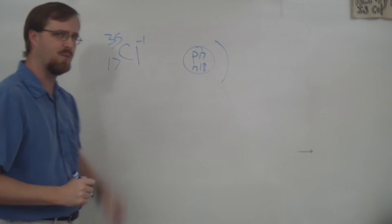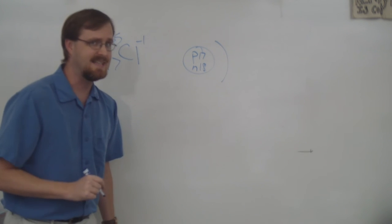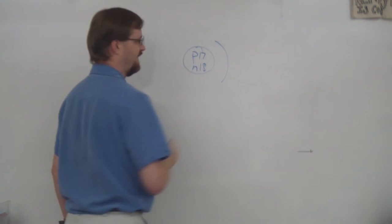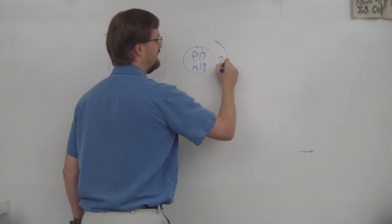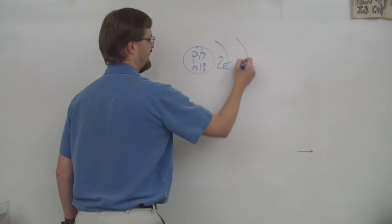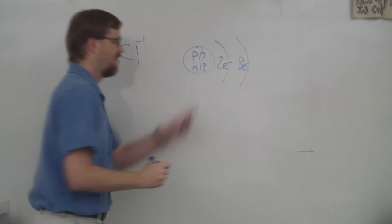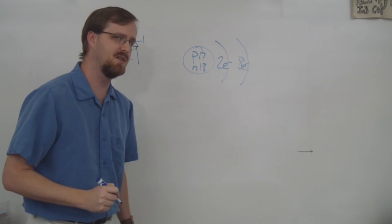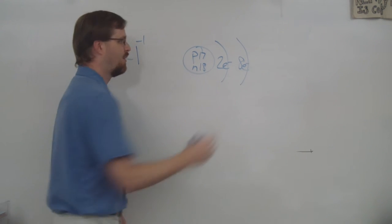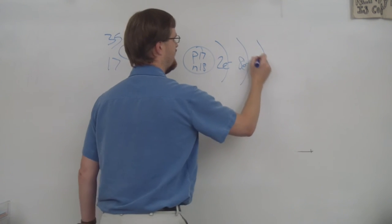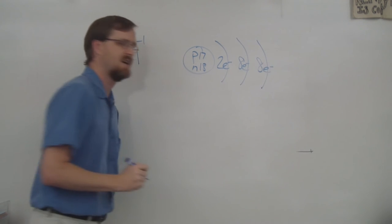And since this has a charge of negative one, we just said that it has 18 electrons. We're going to start filling up our energy levels. The first level is two, the second level can hold eight. That right there is ten electrons, which means we still need eight more.